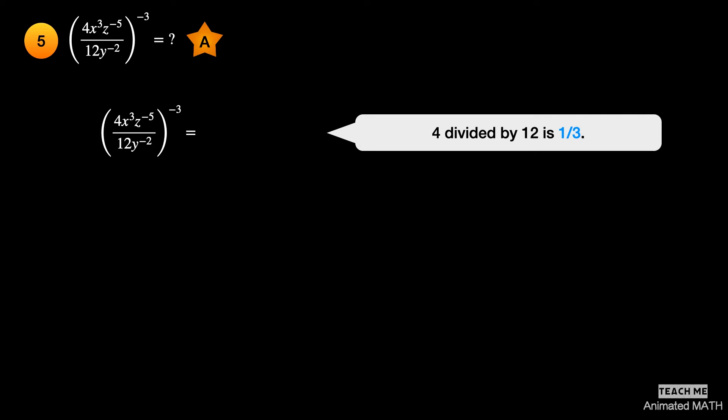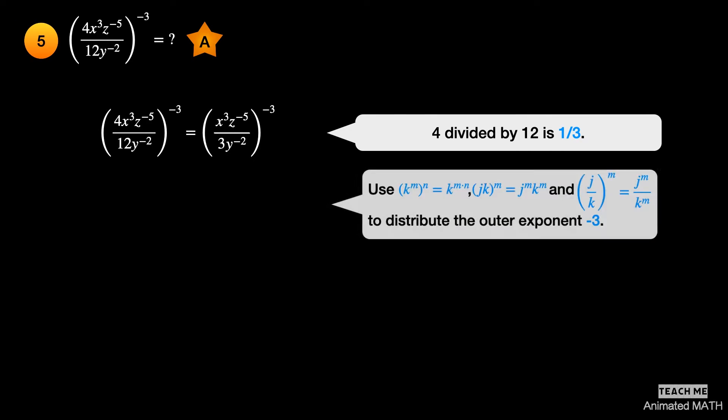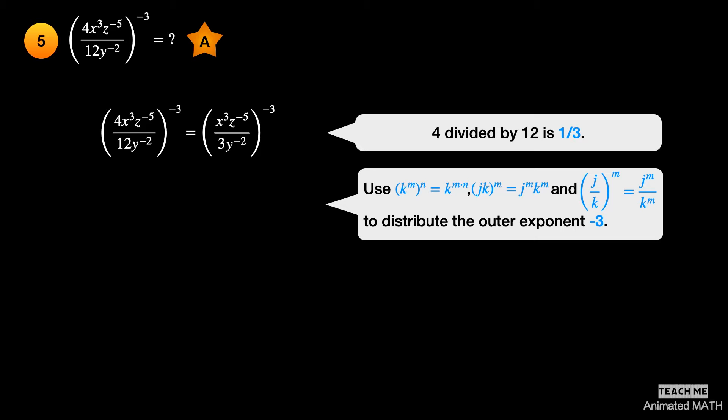First, simplify 4 over 12 into one third. Use the seventh, eighth, and ninth properties to distribute the exponent negative 3 to the terms inside the parenthesis. The exponent of base 3 is negative 3. The new exponent of x is 3 times negative 3, or negative 9. The new exponent of z is negative 5 times negative 3, or positive 15. The new exponent of y is negative 2 times negative 3, or positive 6.